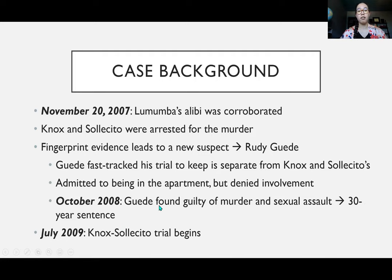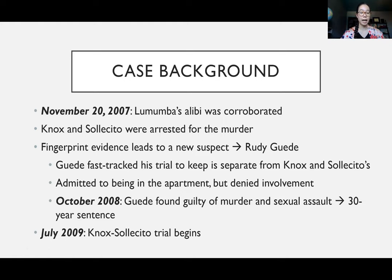Just because Guede was found guilty didn't stop the investigation into Knox and Solicito. The prosecution proposed that Knox, Solicito, and Guede all worked together. They theorized that Knox attacked Kircher in the bedroom, then they held her down for Guede to sexually assault her. Knox then used a knife to stab her and cut her throat, and once she was dead they took mobile phones and money in order to fake a burglary and stage it as a burglary as opposed to a murder.